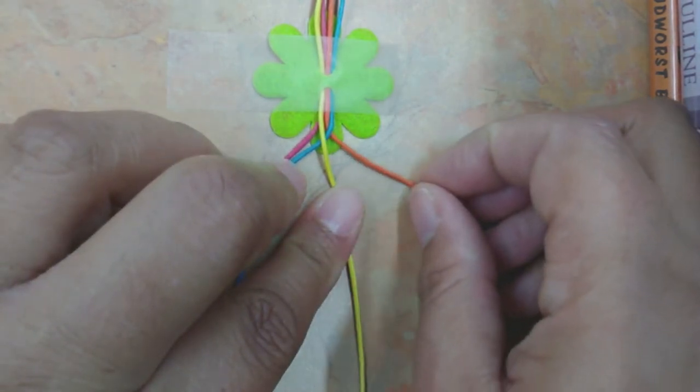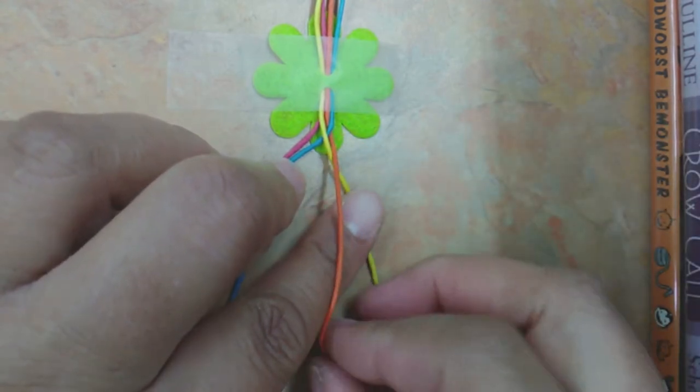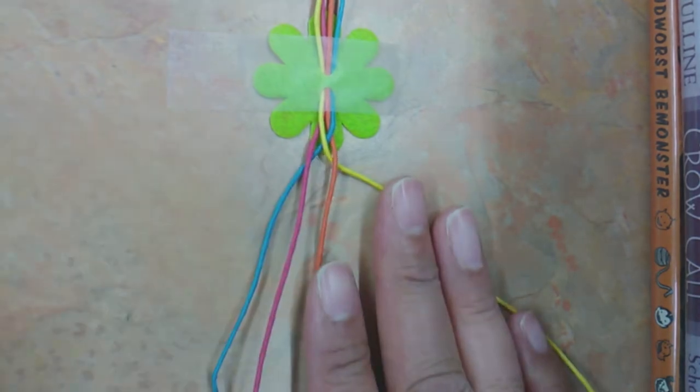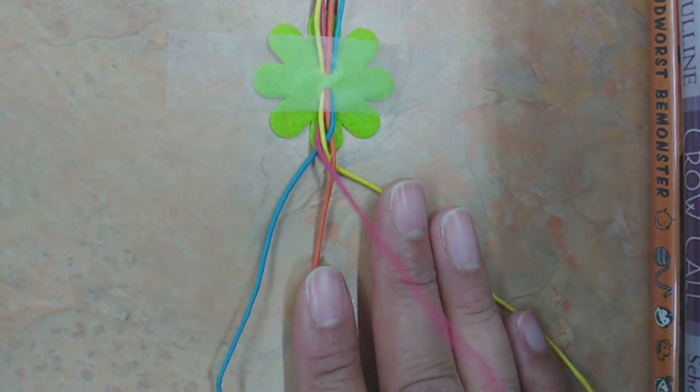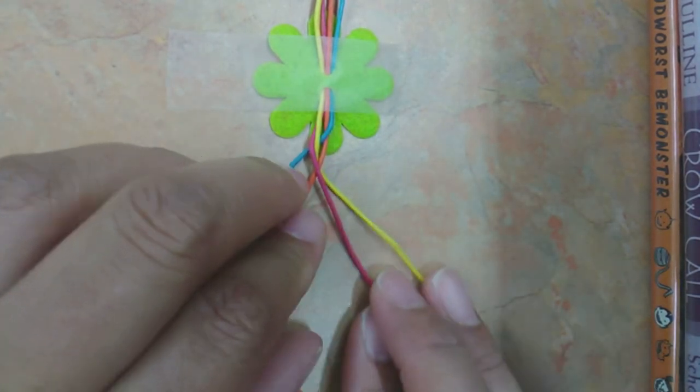Then go back to the right-hand side and cross that string over the string that's right next to it. Then go back to the left-hand side and cross that string over the two strings that it's closest to.